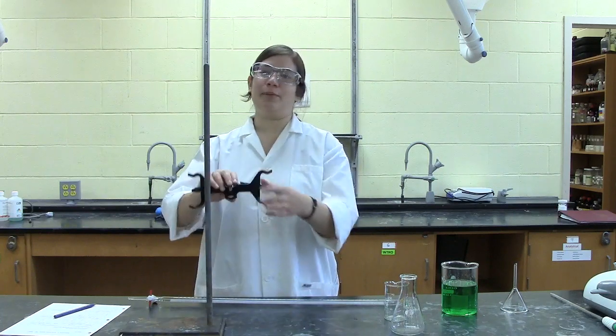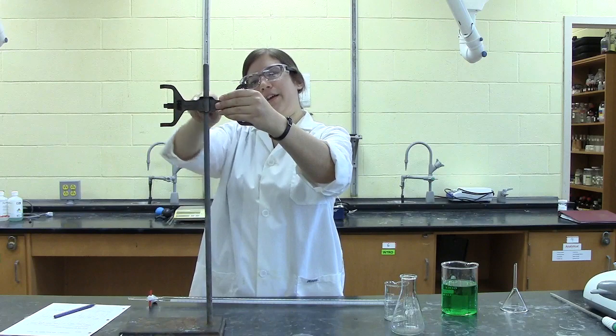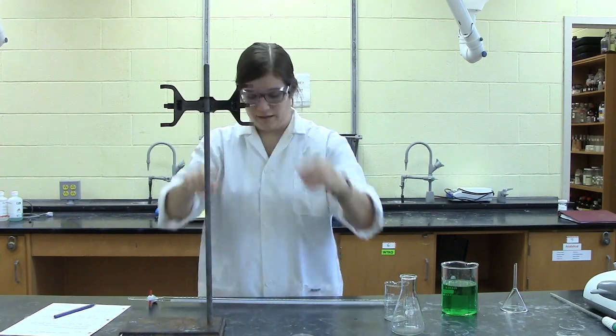To use a burette, first attach the burette clamp to a retort stand by sliding it over the bar and turning the screw to make sure that it's steady.